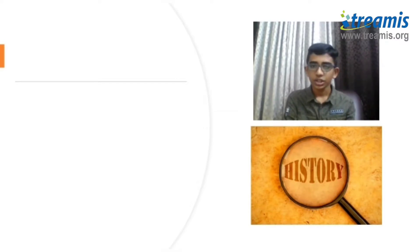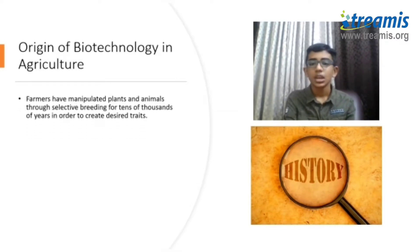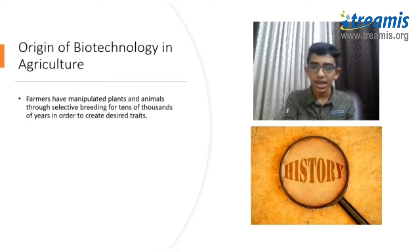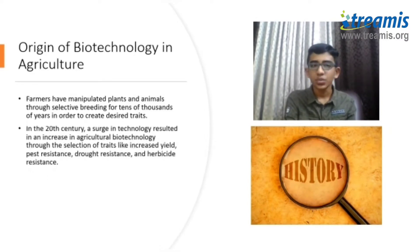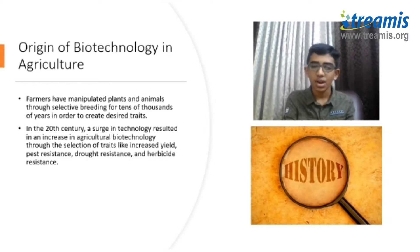How did biotechnology originate in agriculture? Since tens of thousands of years, farmers have manipulated plants and animals through selective breeding to obtain desirable characteristics. Since the 20th century, the surge in technology led many farmers to use agricultural biotechnology to obtain desirable characteristics such as increased yield, pest resistance, and drought resistance.